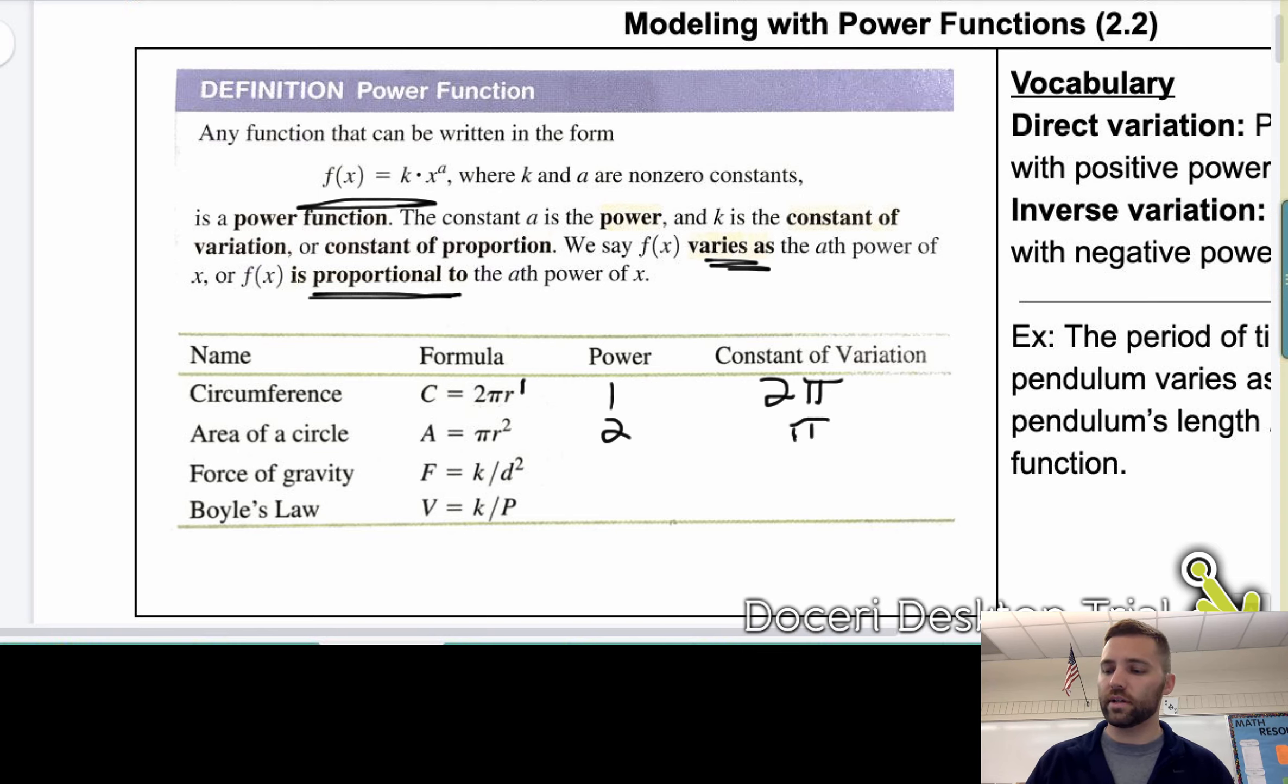This one is a little bit different. Now we have k divided by d squared. And so what I want to show you is that if I write F equals k divided by d squared, that's equal to k times d to the negative 2. So I can rewrite division by a squared power as d, or whatever the variable is, to the negative 2 power. So here, the power is negative 2, and the constant of variation is k. And a lot of times we will denote the constant of variation with a k.